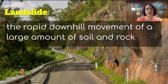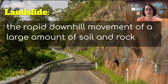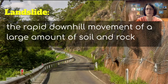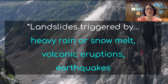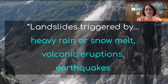Sometimes we have to build roads through these types of areas. In areas like this where they have a road, they can build a structure over the top of the road that prevents the material from falling onto the roadway and onto cars. Landslides are commonly triggered by heavy rain or snow melt, volcanic eruptions, and earthquakes. I like this picture because you can actually see the landslide taking place — all that dust in the air is because the landslide has just occurred.